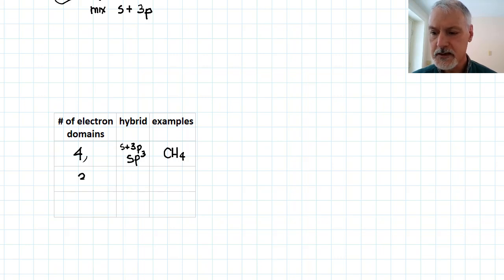If I require three electron domains, that's going to require an s orbital and only two of the p orbitals. And I would create something called an sp2 hybrid, which would be trigonal planar in shape. That will come into play when we look at this example.